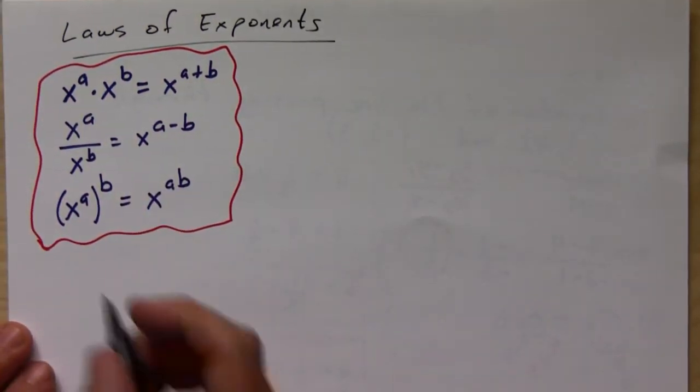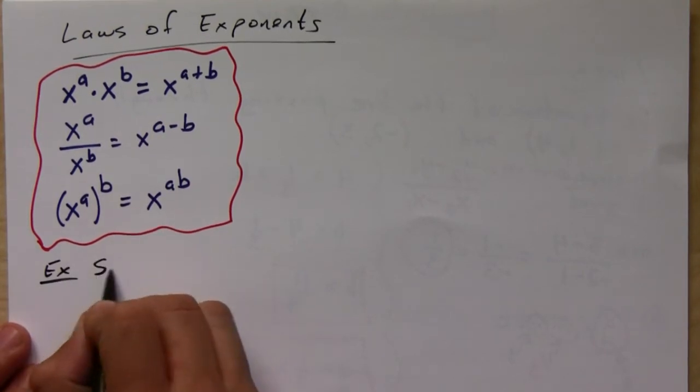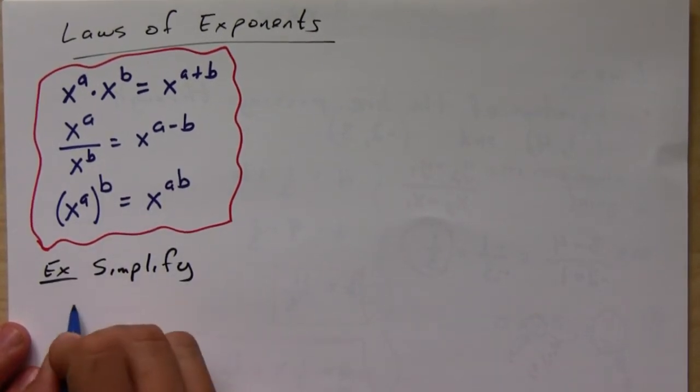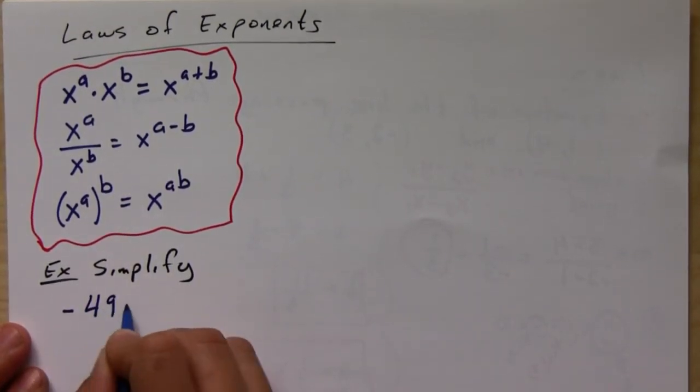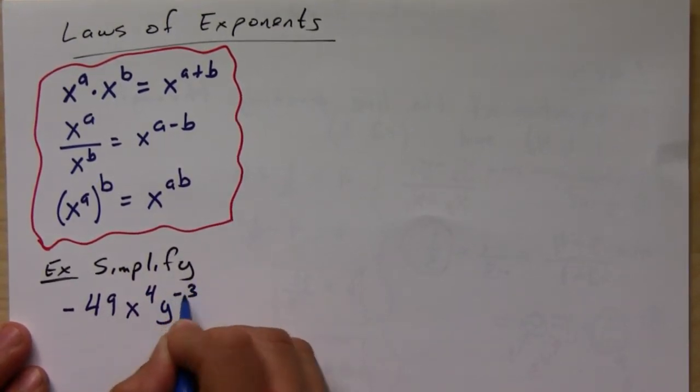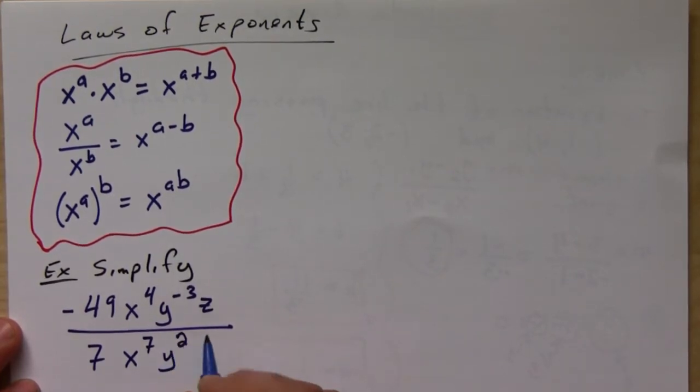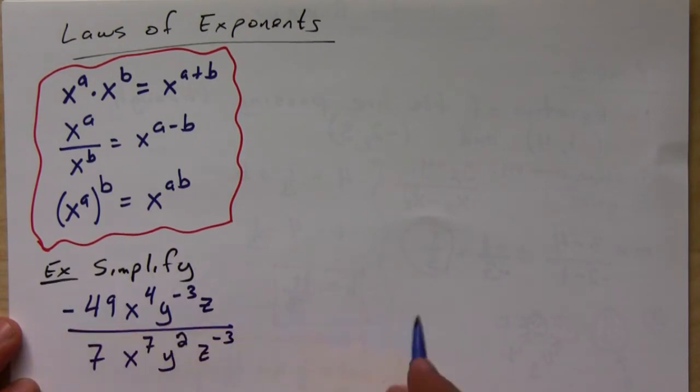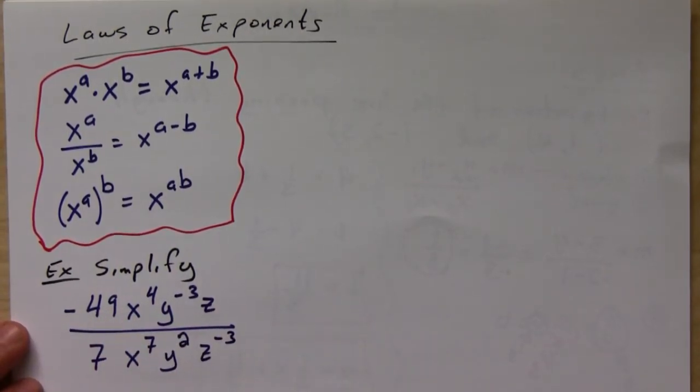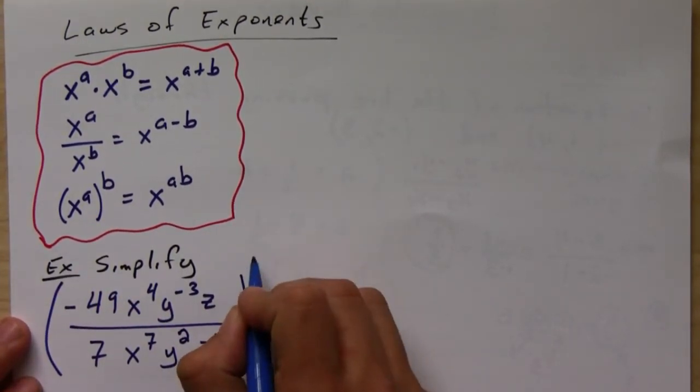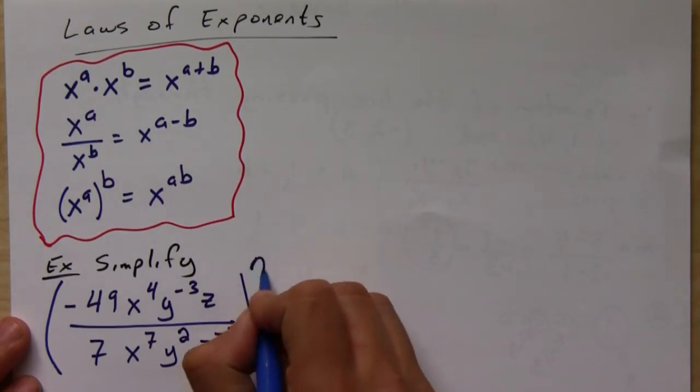Okay, so let's put this together. Let's say, for example, I want to simplify something like negative forty-nine x to the fourth y to the negative third z over seven x to the seventh y to the second and z to the negative three, and let's say all of this is being raised to the second power.